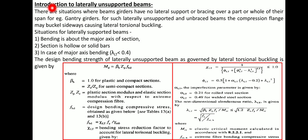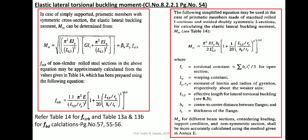For beams that do require lateral torsional buckling consideration, the elastic lateral torsional buckling moment Mcr is calculated as per Clause 8.2.2.1, page 54 of IS 800. Similarly, fcrb — the extreme fiber bending compressive stress corresponding to the elastic lateral torsional buckling moment Mcr — can also be calculated directly. This is analogous to compression member design where buckling classes a, b, c, d are defined.